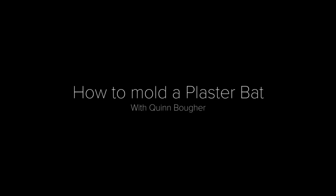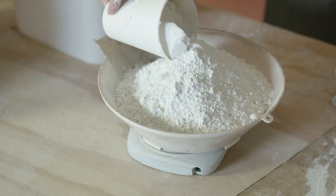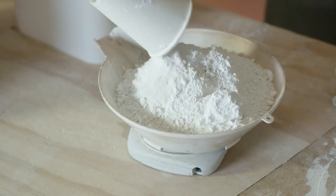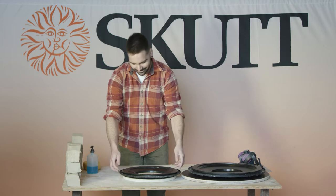So the first thing to be sure of is that you're accurately measuring your water, and for this system it seems like one gallon of water and 12 pounds of plaster is the correct ratio.